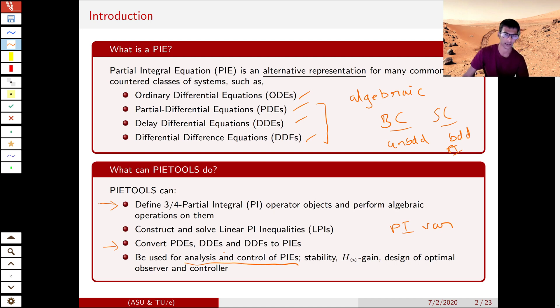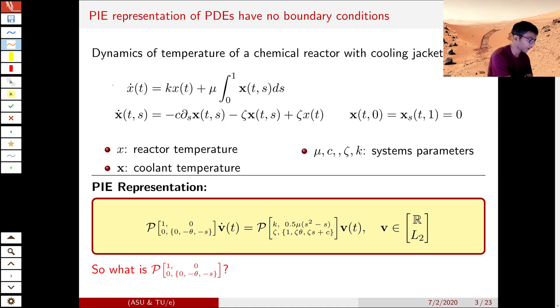So what do these PIEs look like? Let's look at an example. We have an ODE coupled with PDE, and the coupling is via dynamics through these two terms. And we have boundary conditions on the PDE state.